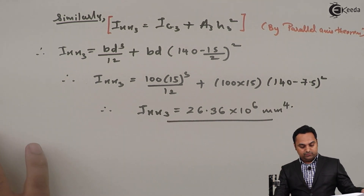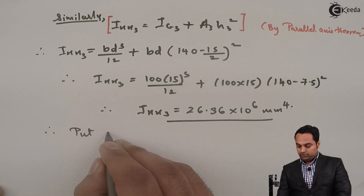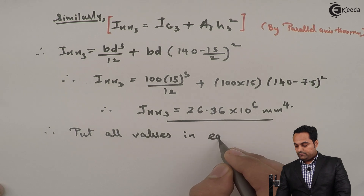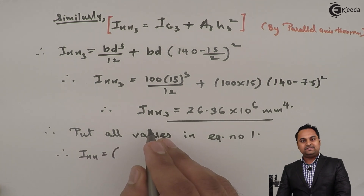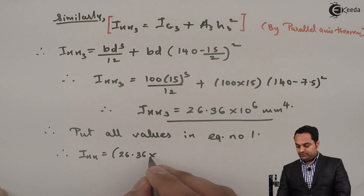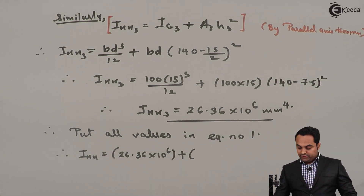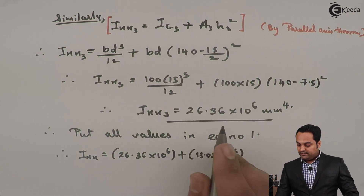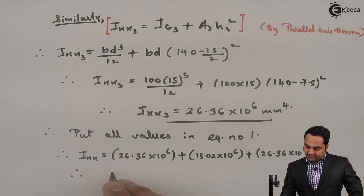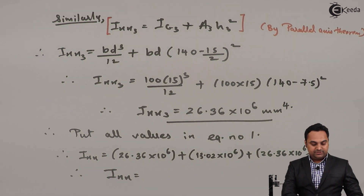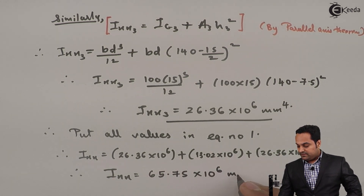Putting all values in equation 1: Ixx equals Ixx1 plus Ixx2 plus Ixx3, which is 26.36 × 10⁶ plus 13.02 × 10⁶ plus 26.36 × 10⁶. Adding all values, the answer for Ixx is 65.75 × 10⁶ mm⁴. This is kept as equation A.